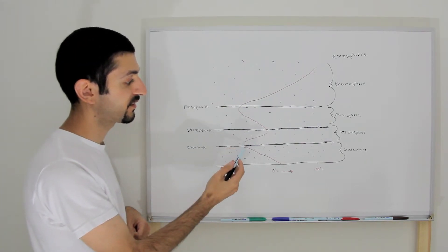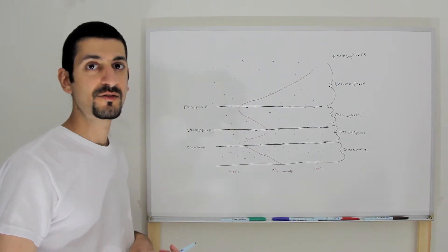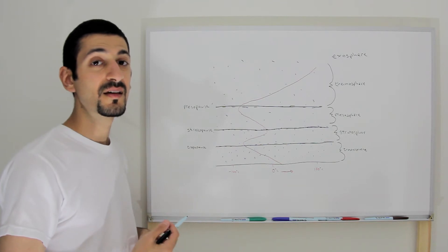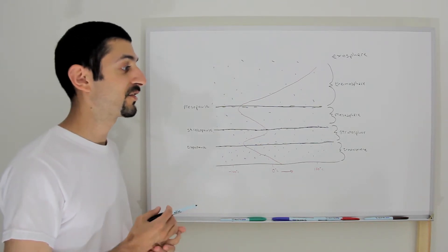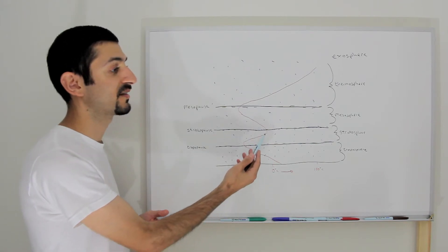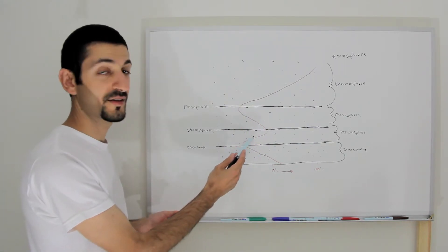But then in the stratosphere, it's getting even less dense with height. Once you get to the stratosphere, when you get up to over 100,000 feet, the atmospheric pressure can drop down to like 10 millibars and even less as you go up with height. Well, why does the temperature get warmer?